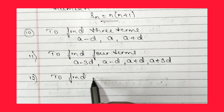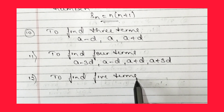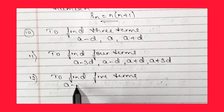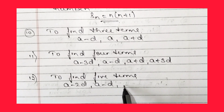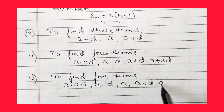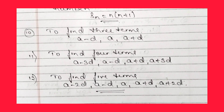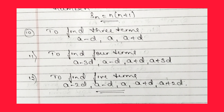The twelfth formula: to find five terms of an AP, use (a-2d), (a-d), a, (a+d), (a+2d). In total, these 12 formulas can be used to solve problems related to arithmetic progression. Thank you for watching — please subscribe, like, share, and press the bell icon for notifications.